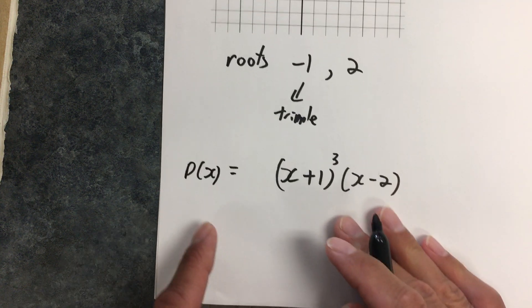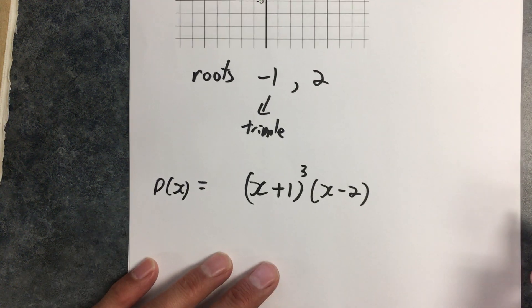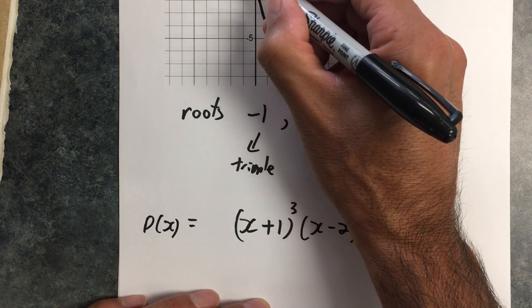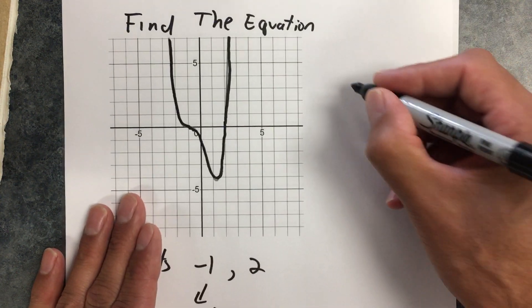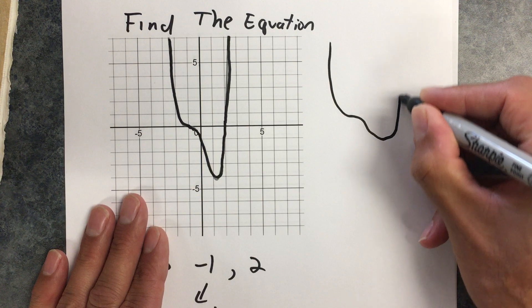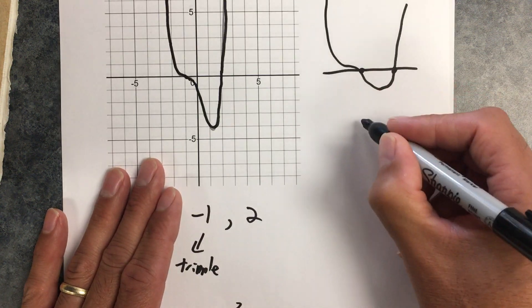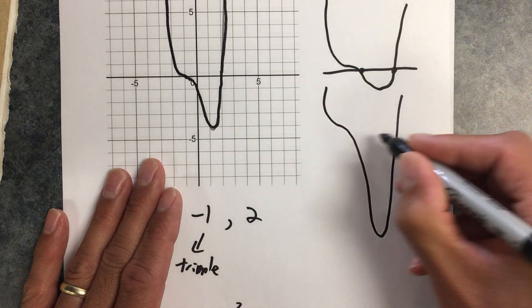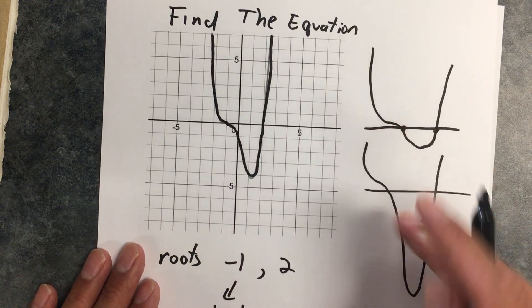Now, if I was to just say that my polynomial is equal to this and I'm done, I could be wrong. Because this could represent any polynomial that has roots here and has a triple root here. But it could be shallower and have those same roots, or it could be deeper and have those same roots. So how do I get this one exactly?